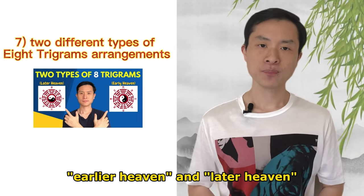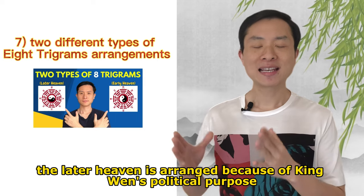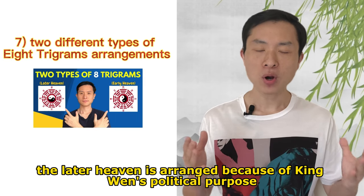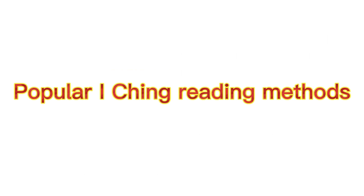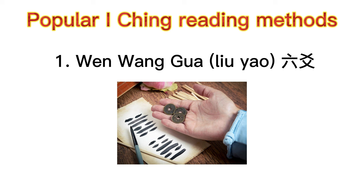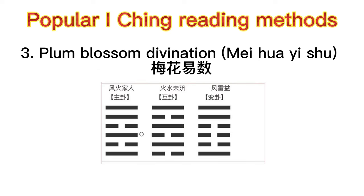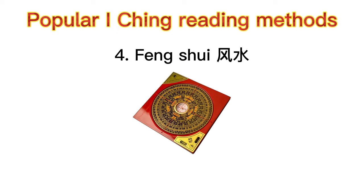Earlier Heaven and Later Heaven — Early Heaven is arranged because of Chinese geographical features, and the Later Heaven is arranged because of King Wen's political purpose. For the last 3,000 years, many great Chinese scholars have created lots of different reading methods based on I-Ching theory. Nowadays the most popular ones are: Liu Yao, Four Pillars of Destiny (BaZi), Plum Blossom Divination (Mei Hua Yi Shu), and Feng Shui.